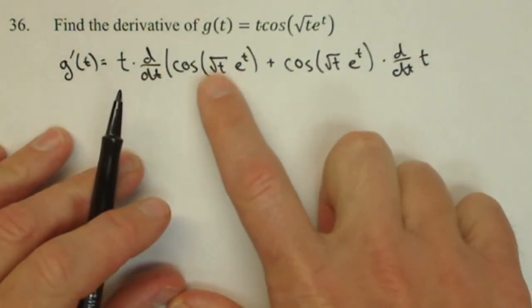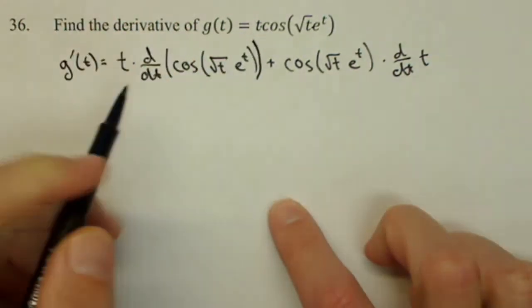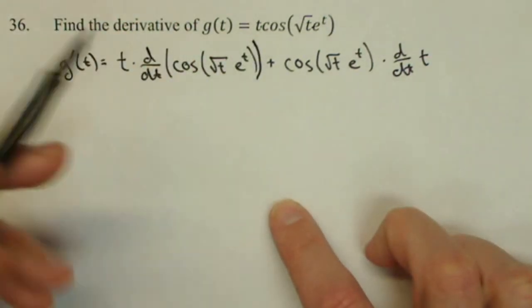This one, we've got a little bit more going on, and I'm missing a parenthesis. Because I'm taking cosine of more than just t.